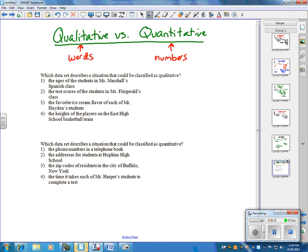If you look at the data set described for the first question, it says, which data set describes the situation that could be classified as qualitative? With one, it says the ages. Ages are numbers, so that means that one is out.